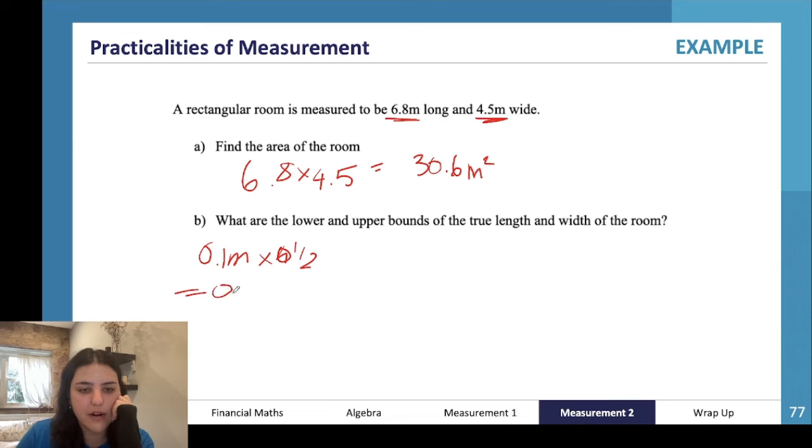So we times that by half - sorry - so our actual absolute error is 0.05 meters. Which means our lower and upper bounds of the true length and width are going to be 6.8 minus 0.05, so 6.75 to 6.85.